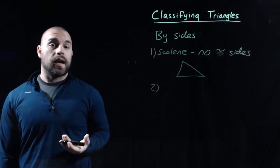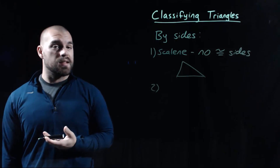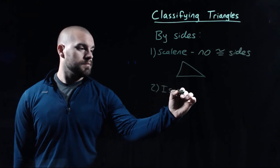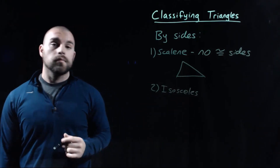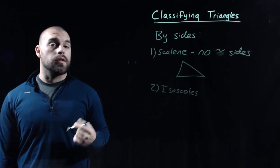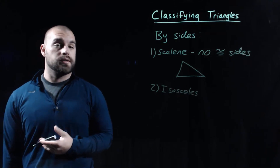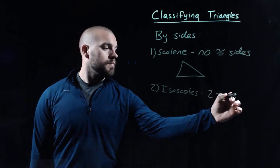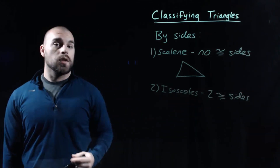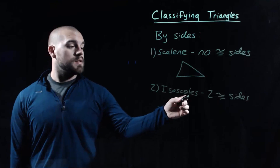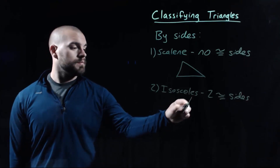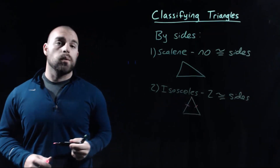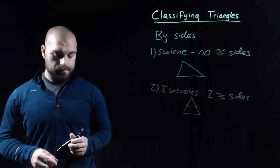The second kind of triangle is an isosceles triangle. In an isosceles triangle there are two congruent sides. So if we draw a picture of an isosceles triangle, we would want to mark two sides as being congruent.